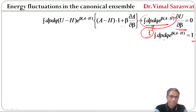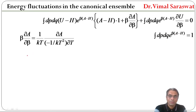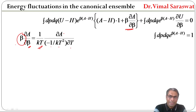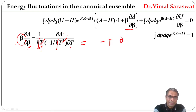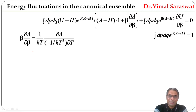Now if we solve separately: beta del A by del beta, since beta equal to 1 upon kT, we get del beta equal to minus 1 upon kT² dT. Therefore beta del A by del beta equals (1 upon kT) times del A times (minus 1 upon kT²) dT. Cancelling k and T: beta del A by del beta is equal to minus T del A by del T at constant volume V.